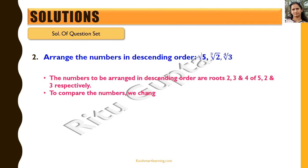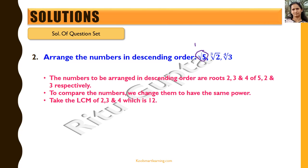In this case, we bring them to the same power. The power for 5 is 1 by 2, the power for 2 is 1 by 3, and the power for 3 is 1 by 4. To bring them to the same power, we take the LCM of 2, 3, and 4, which is 12. We can then change all these numbers to their 12th root to compare them. To change root 5 into the 12th root of a number, we get the 12th root of 5 raised to the power 6.